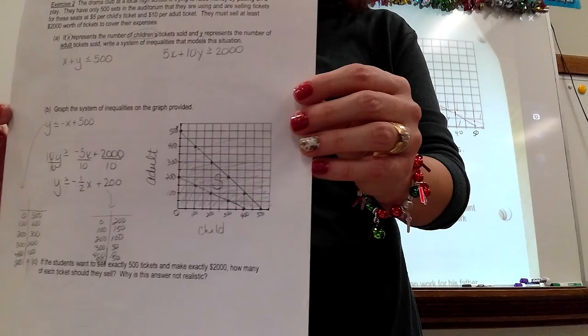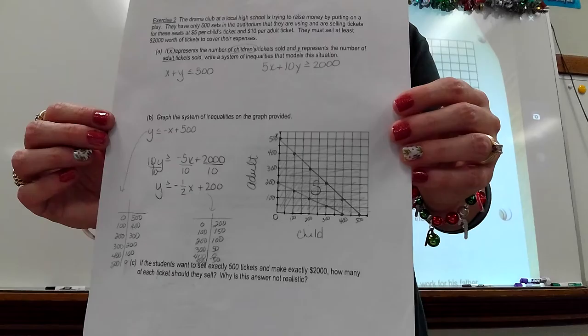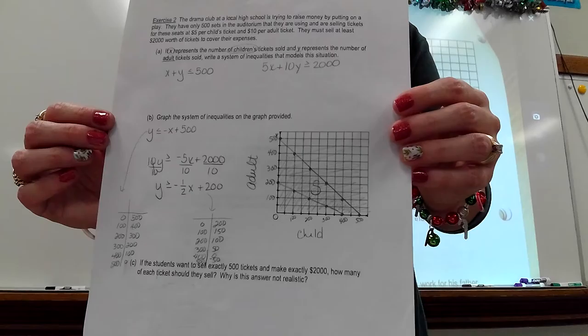You can see my system that I wrote. You can see me change them, get the whys by themselves. Then I went to my table, and I picked some points that I thought I could easily graph, and then I went and I graphed it.